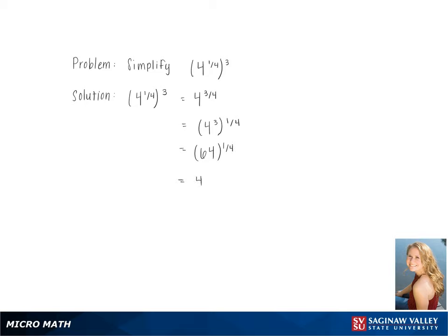4th rooting, we get the 4th root of 64. Breaking down the inside of the root, we get 16 times 4. This gives us 2 times the 4th root of 4, which is our final answer.